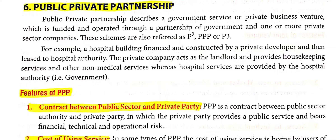Next and last topic of Chapter 3: Public-Private Partnership, also known as PPP or P3. PPP describes a government service or private business venture — when government and a private company together start some work or venture, it is called a Public-Private Partnership, which is funded and operated through a partnership of government and one or more private sector companies.